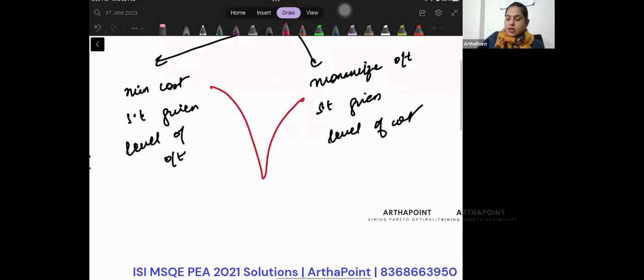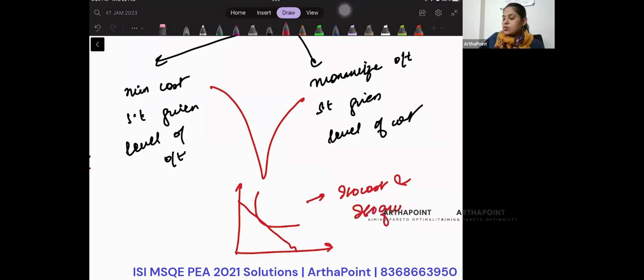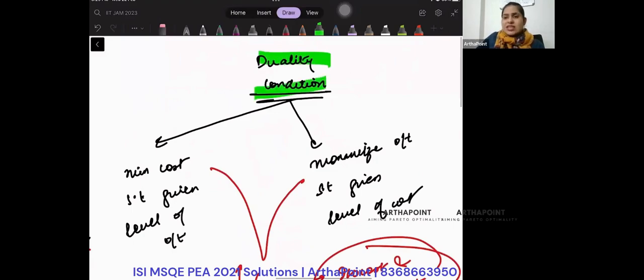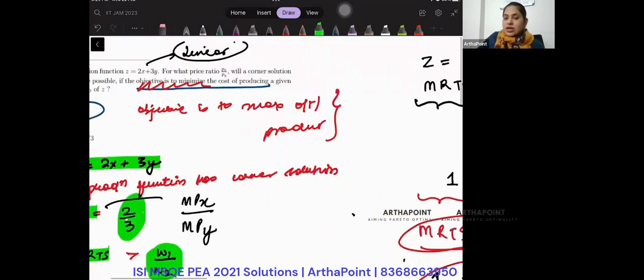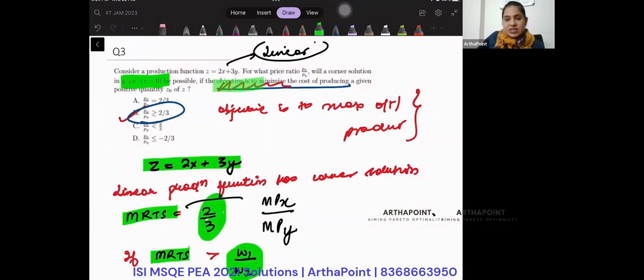Or you can maximize output subject to a given level of cost. In all cases, you will get, in the general case, a tangency condition between isocost and isoquant. So this is a duality condition. Even if instead of minimizing cost it would have been maximize output, I would have done the same thing. I would have compared MRTS to the price ratio. Thank you.